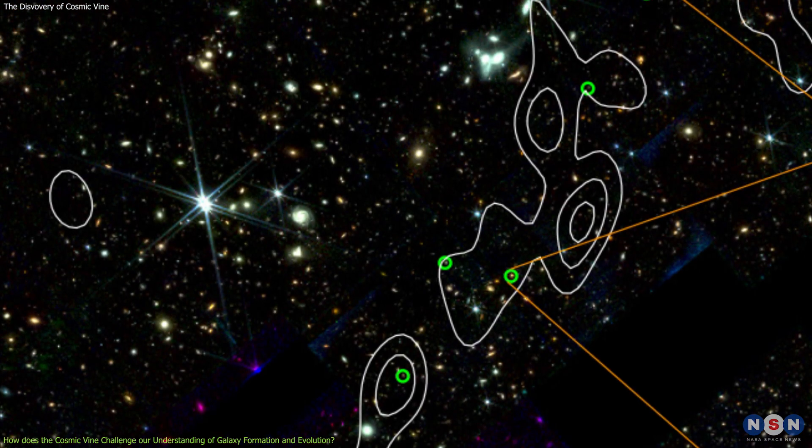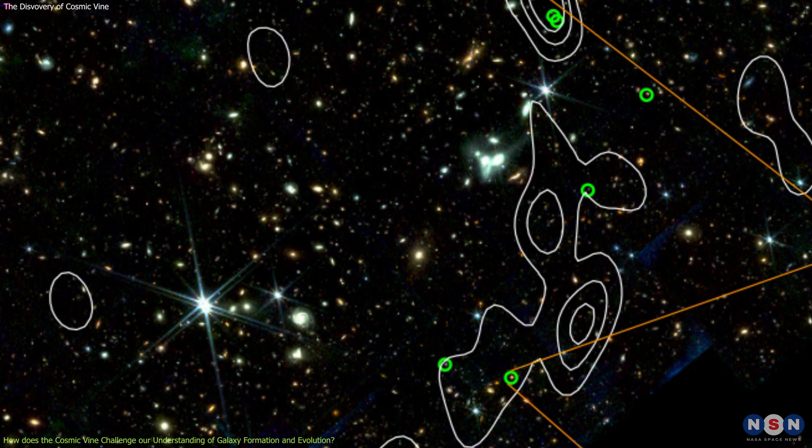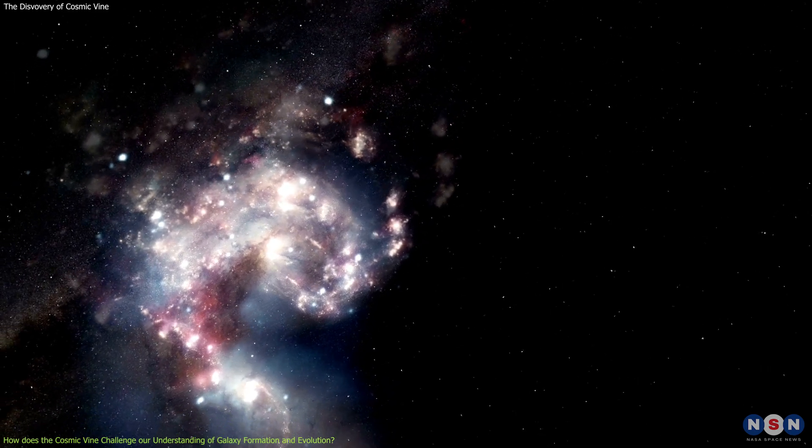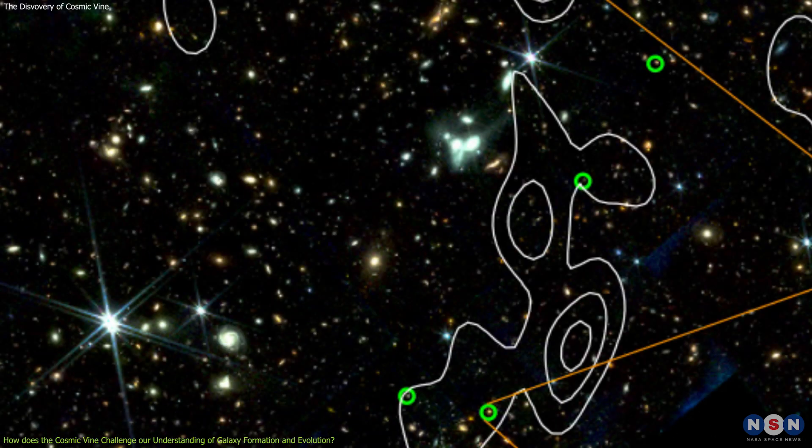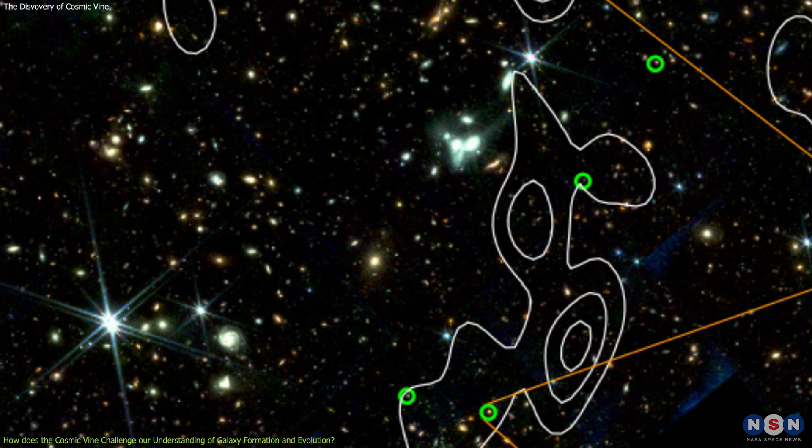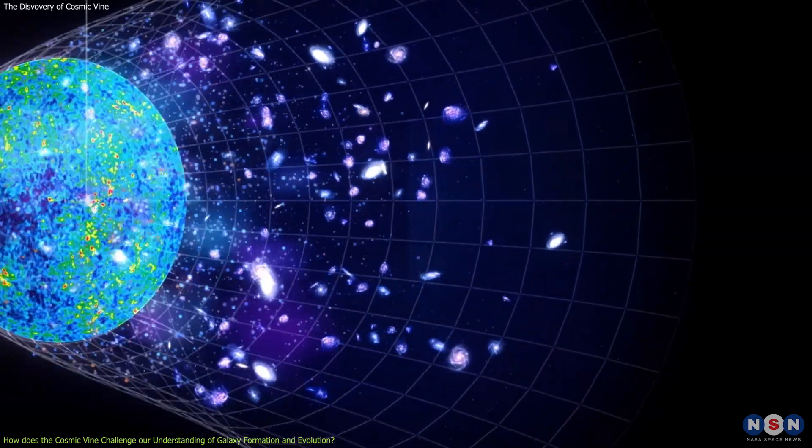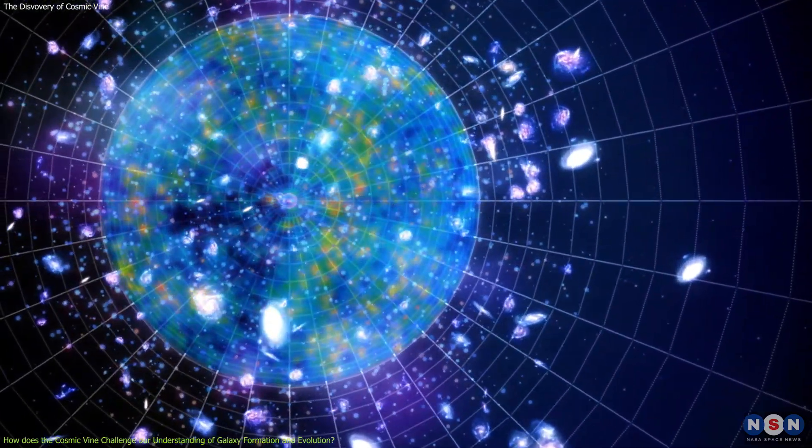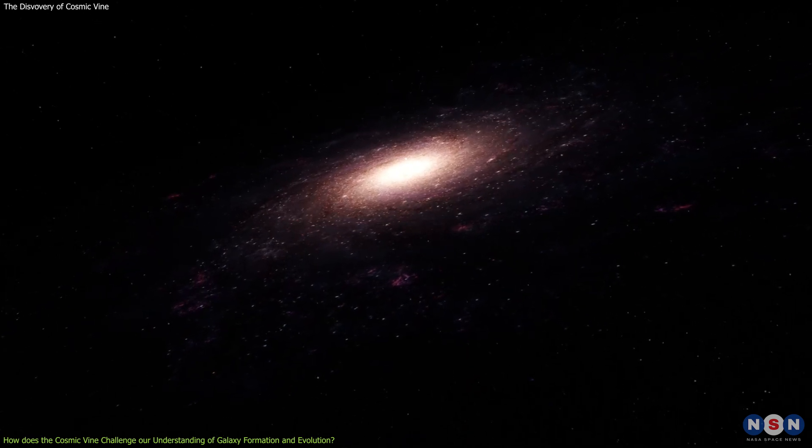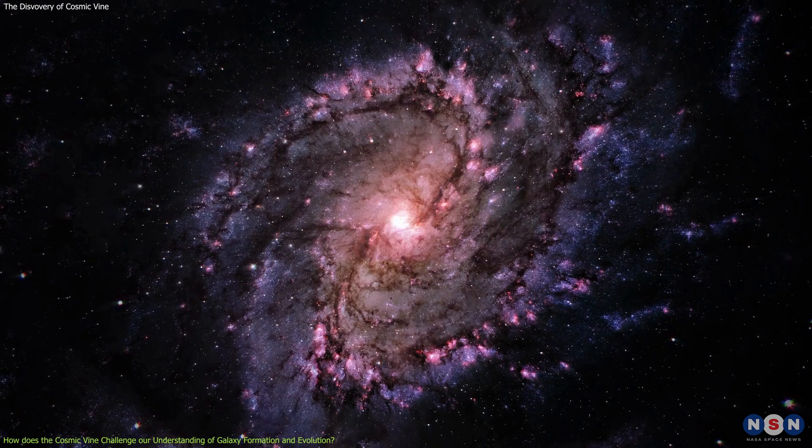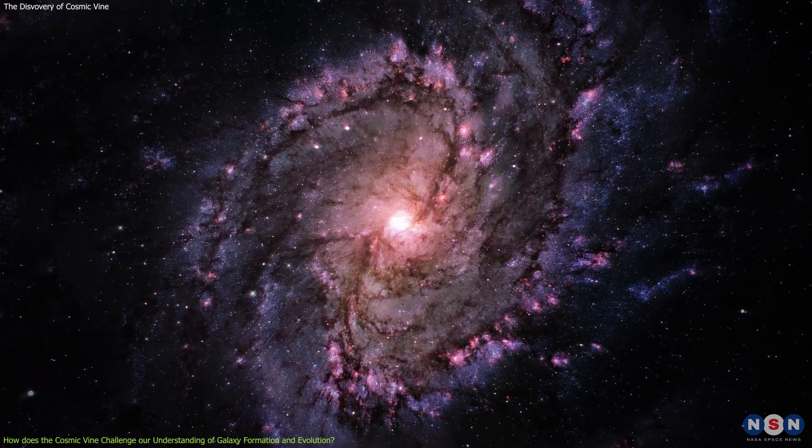However, the cosmic vine is very massive and complex, comparable to some of the largest structures in the present-day universe. How did the cosmic vine form and grow so quickly and efficiently in the early universe? Another example is that the Lambda Cold Dark Matter model predicts that the galaxies at high redshifts should be more homogeneous and simple than those at low redshifts, due to the lack of metal enrichment and feedback processes.